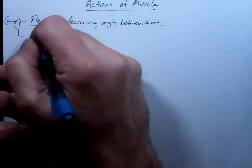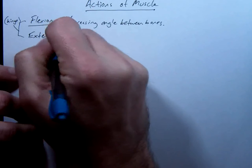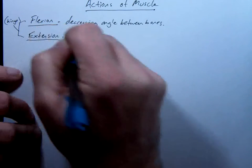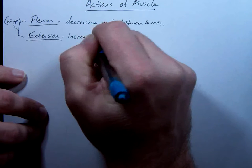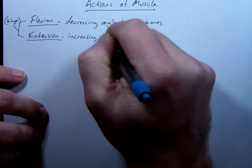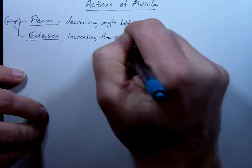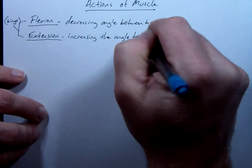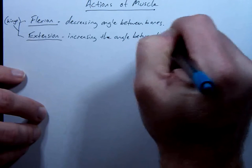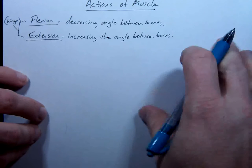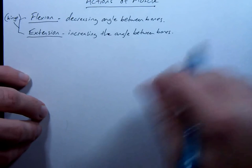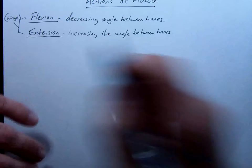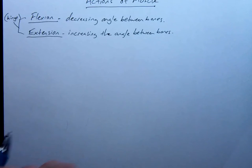This is extension. Extension is increasing the angle between bones. So, like I said, mostly these are going to occur at hinge joints.